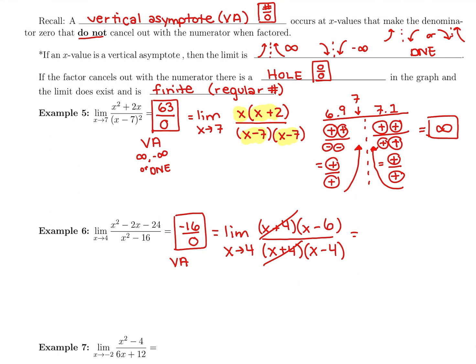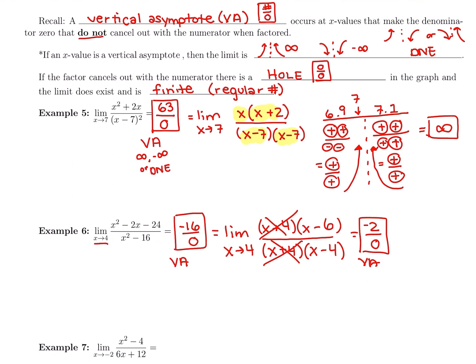Wait — can we just plug in after canceling? We're taking the limit as x goes to 4. In the top, 4 minus 6 is negative 2. In the bottom, 4 minus 4 is 0 — still a vertical asymptote. But factoring made it much easier to plug into than the original function. We'll plug into the factored and canceled form, approaching 4 from the left and right using 3.9 and 4.1.